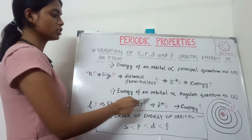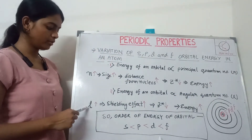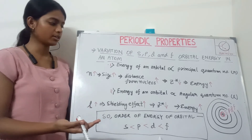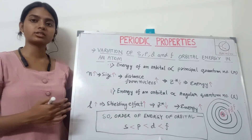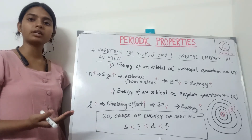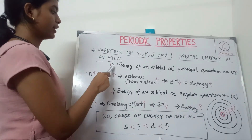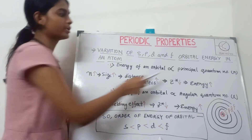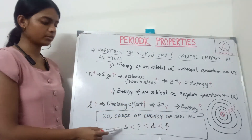Now, the energy of the orbital is also directly proportional to the angular quantum number L. As the L value increases, the shielding effect also increases. Due to the increasing shielding effect, the nuclear charge — that is, the attraction force of the nucleus on each orbital — decreases. So Z-effective decreases, stability decreases, and energy increases. By considering both the principal quantum number and angular quantum number, the order of energy of orbitals is established.